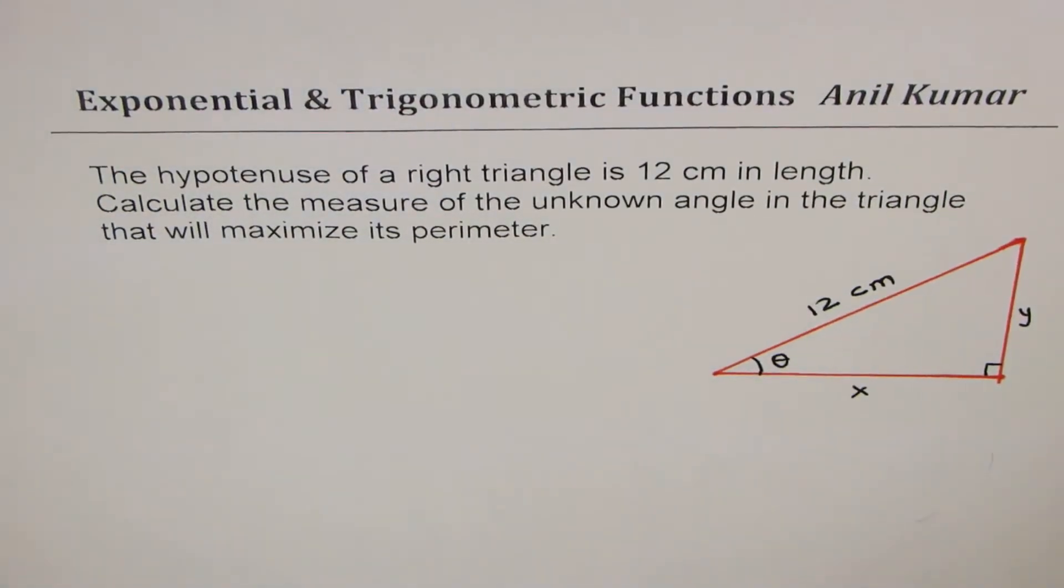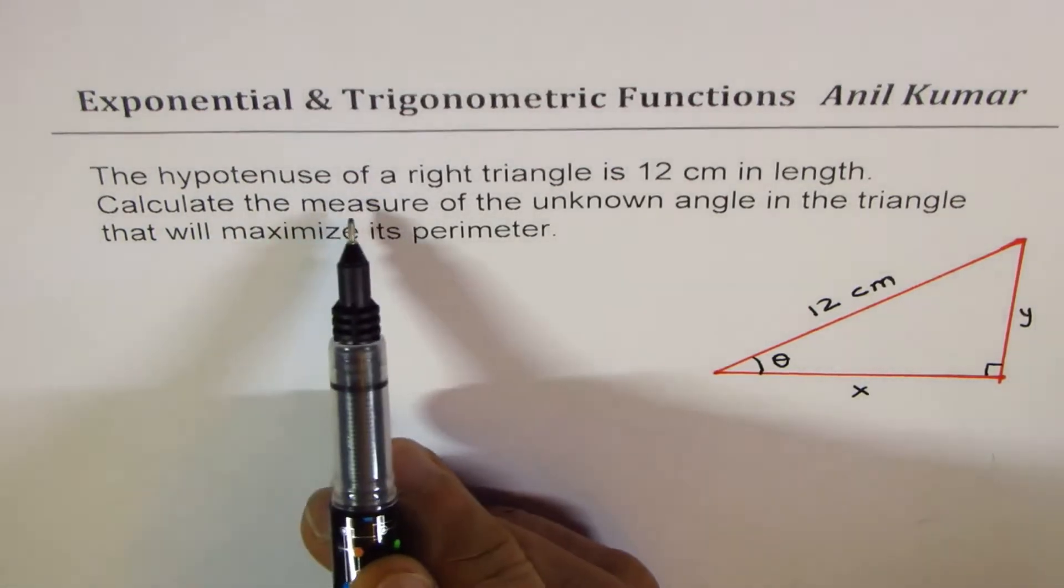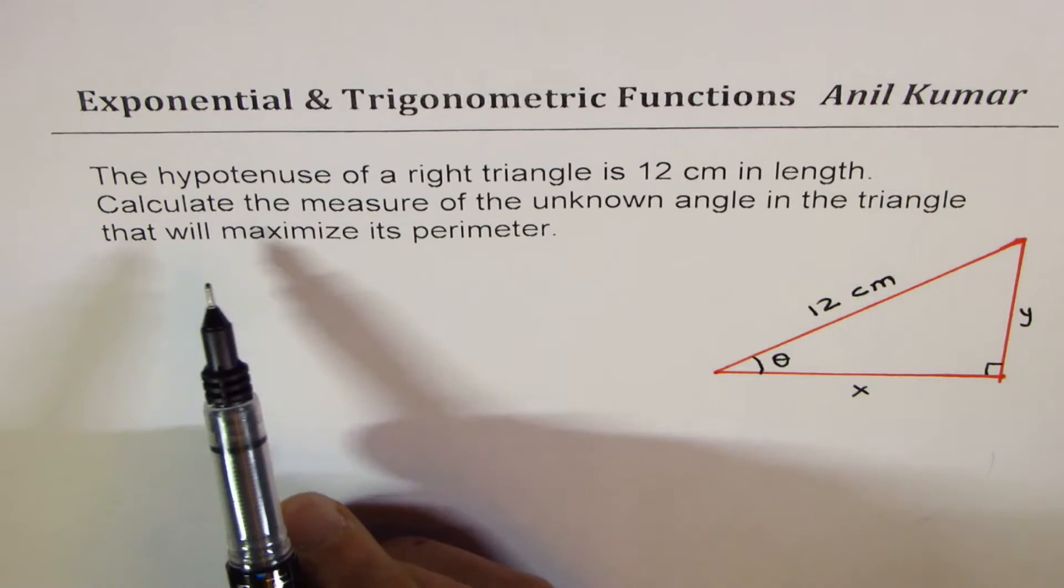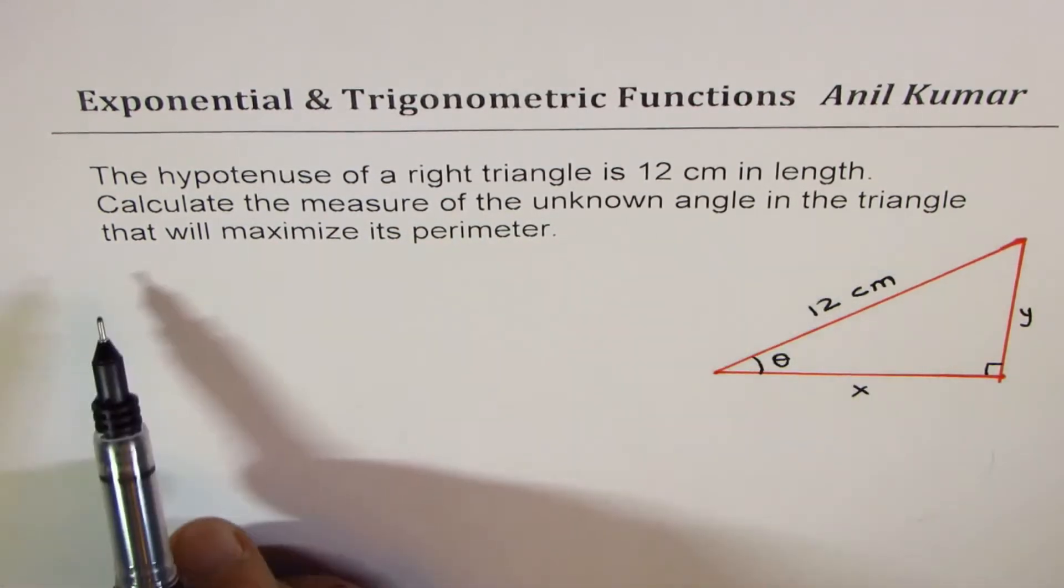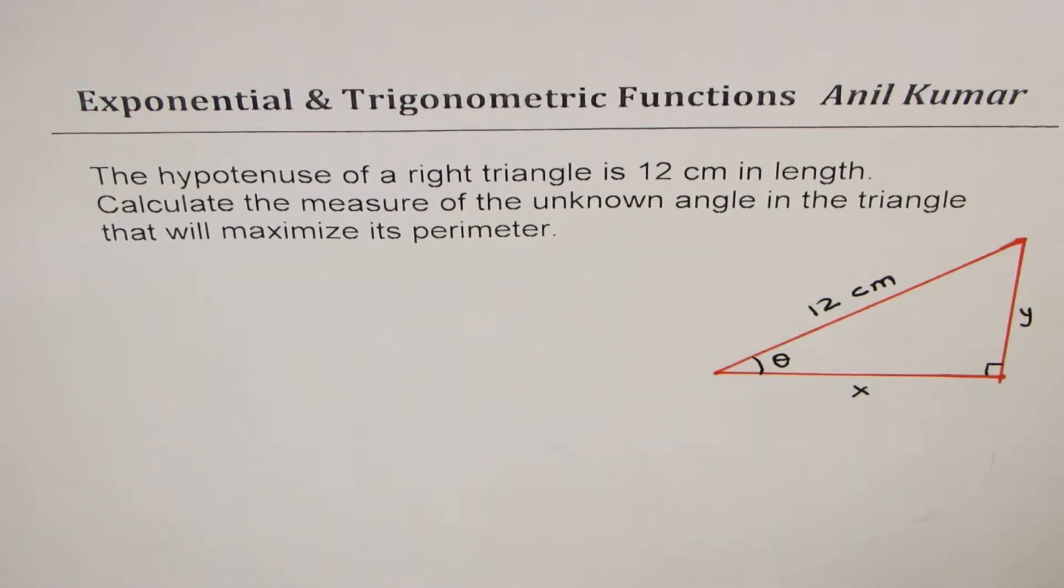I'm Anil Kumar sharing with you a test question on application of trigonometric and exponential functions. The question here is: the hypotenuse of a right triangle is 12 centimeters in length. Calculate the measure of the unknown angle in the triangle that will maximize its perimeter. You can always pause the video, answer the question, and then look into my suggestions.